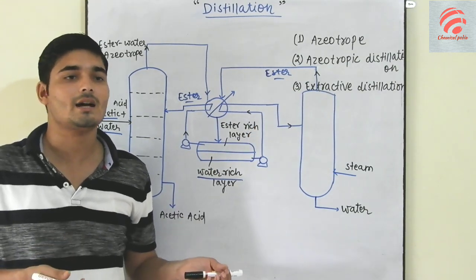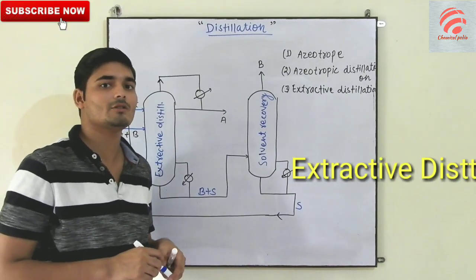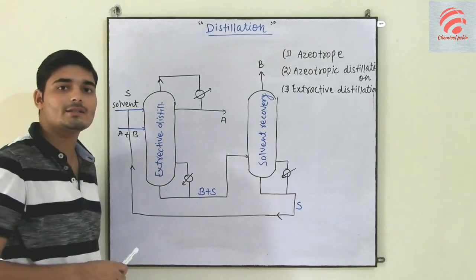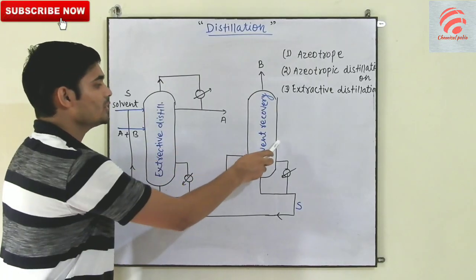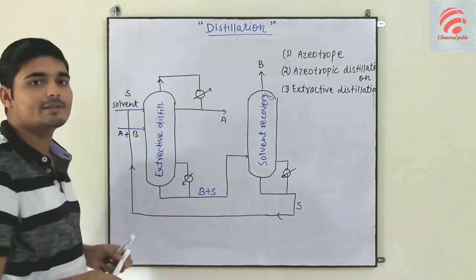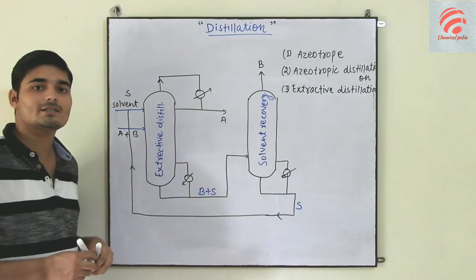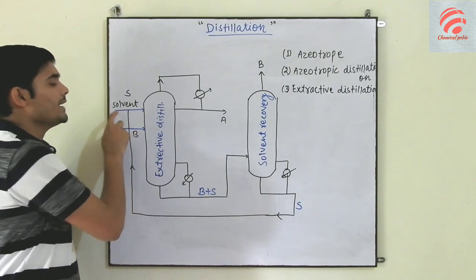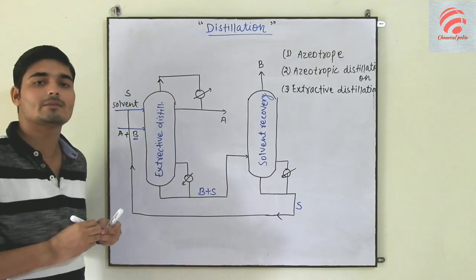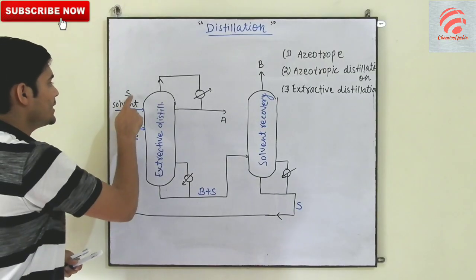Extractive distillation — what do we do? The figure is showing extractive distillation. We use extractive distillation. We have a solvent recovery vessel. Which liquid mixture do we feed? We feed the solubility of component B into the vessel.